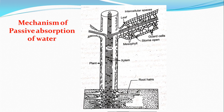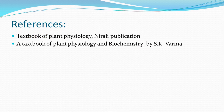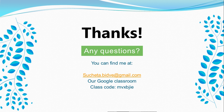This is the mechanism of absorption of water. There are two main theories: active absorption and passive absorption. Active absorption is explained by the osmotic theory and non-osmotic theory, while passive absorption is mainly linked with transpiration. In the next lecture, we will see the factors affecting the process of absorption of water. These are some references used for this lecture. Thank you so much.